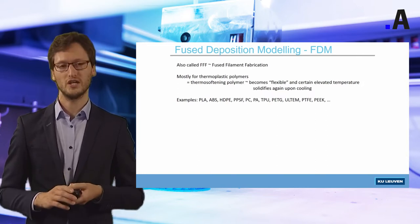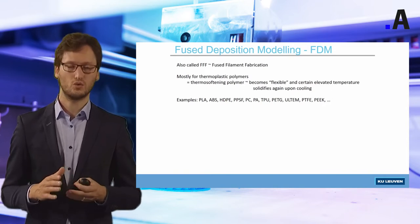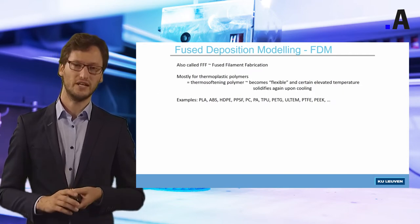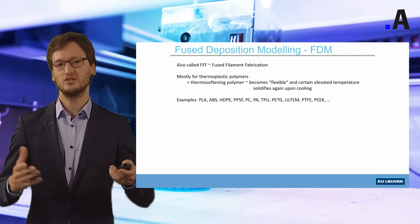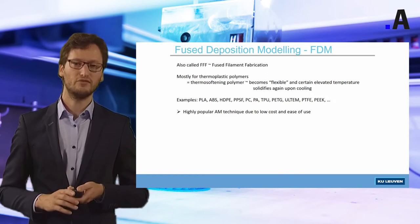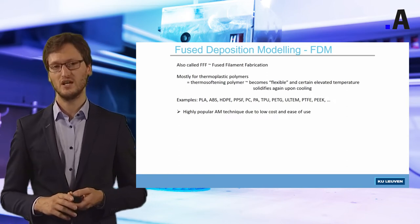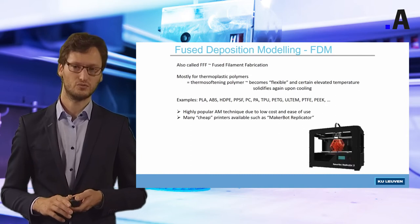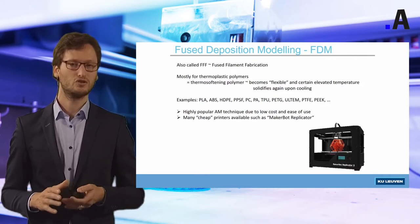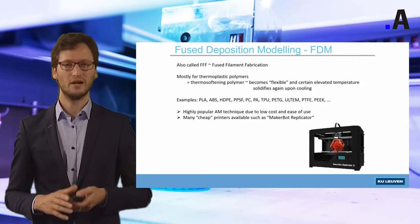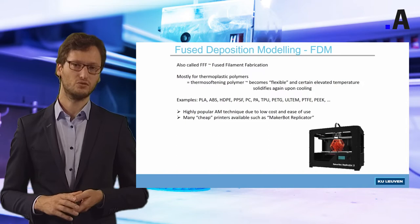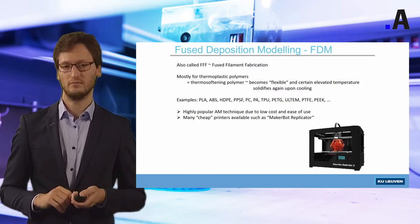Some examples are shown here. Typically with FDM you can process quite a range of different plastics, including PLA, ABS, high-density polyethylene, polyamide, but also more heat-resistant polymers such as Ultem. FDM is a highly popular additive manufacturing technique due to its low cost and ease of use. Many cheap printers are available, such as desktop replicators, which can also be used by students, hobbyists or architects and that are not necessarily expensive.